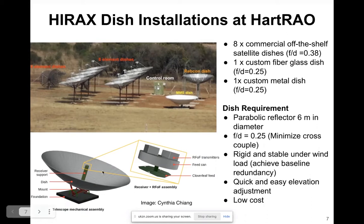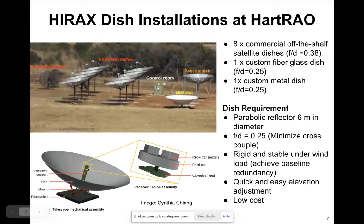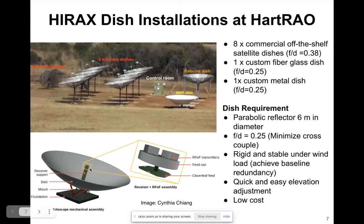The fiberglass column also allows ease of routing for cabling such as fiber and power cables, to reduce loss levels and reduce the amplitude of side lobes within our beam, as the column does reduce the efficiency of our beam.